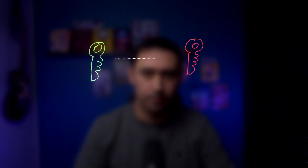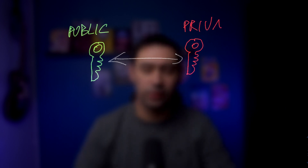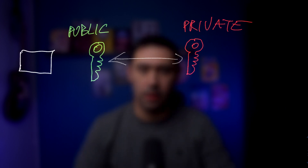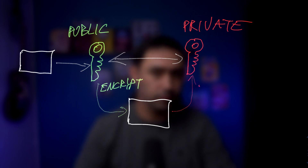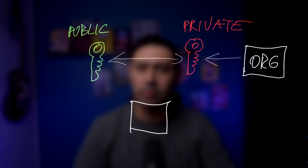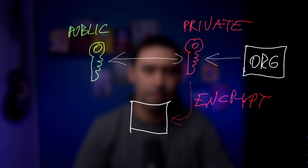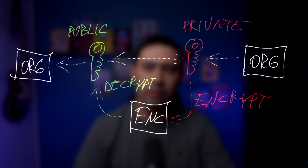Before we go any further, let me tell you about asymmetrical encryption used during key authentication. In asymmetric encryption, there are two keys that form a key pair. One is called the public key, and the other is called the private key. You can encrypt data with the public key, and only the private key can decrypt it. It also works the other way around — data encrypted with the private key can only be decrypted with the public key. Importantly, the private key cannot be derived from the public key.